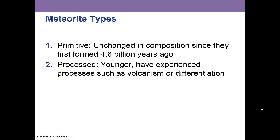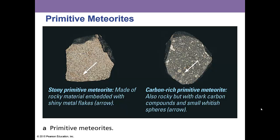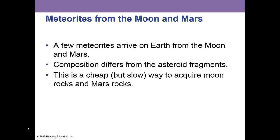Meteorite types: Primitive meteorites are unchanged in composition since they first formed 4.6 billion years ago. Processed meteorites are younger and have experienced processes such as volcanism or differentiation. A few meteorites have arrived on Earth from the Moon and from Mars — their composition differs from asteroid fragments, making this a cheap but slow way to acquire moon rocks and Mars rocks.